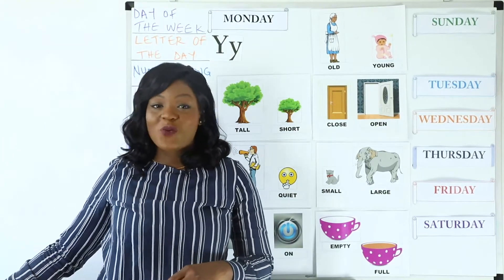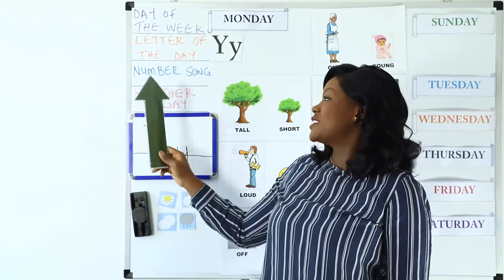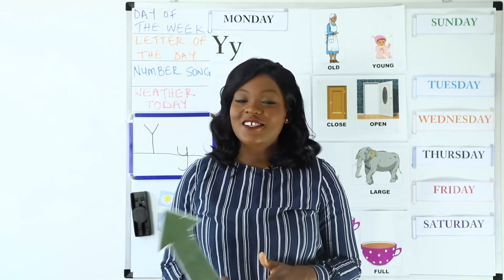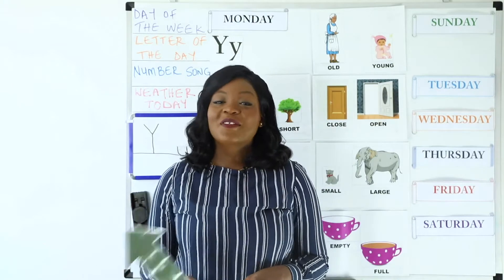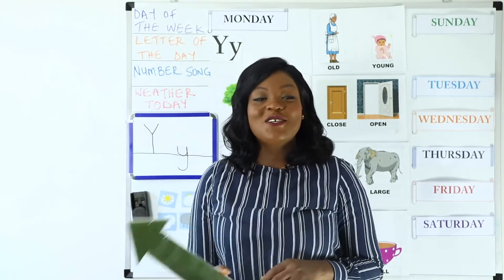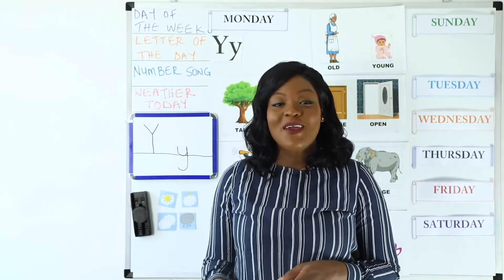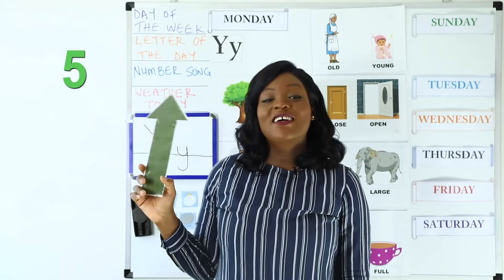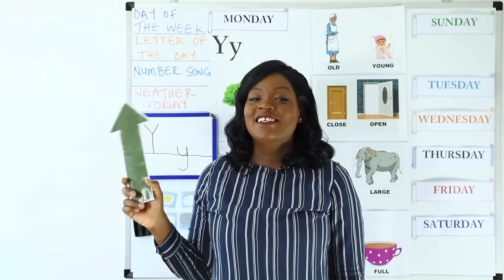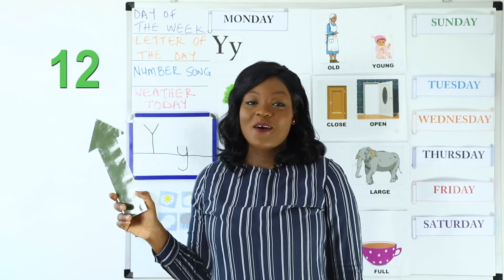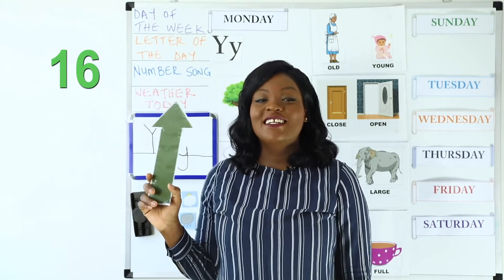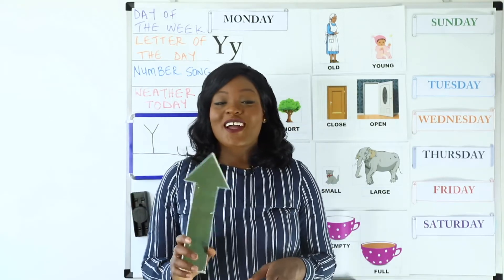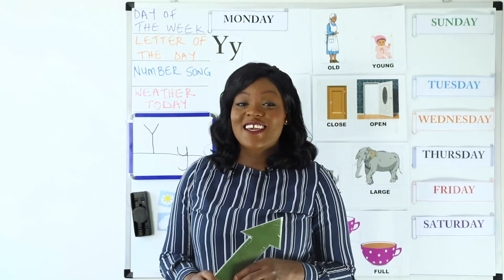Now let's go to the next thing on our board — our number song. Do you remember your number song? Let's count to 20. Count with me: one, two, three, four, five, six, seven, eight, nine, ten, eleven, twelve, thirteen, fourteen, fifteen, sixteen, seventeen, eighteen, nineteen, twenty. Well done and good job everyone — you're counting up to 20 and that is very amazing!